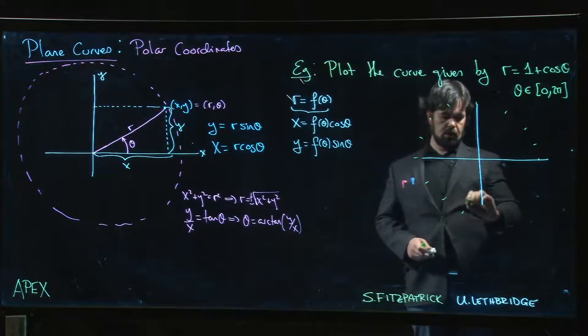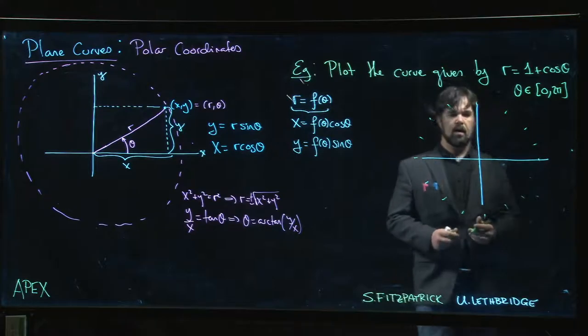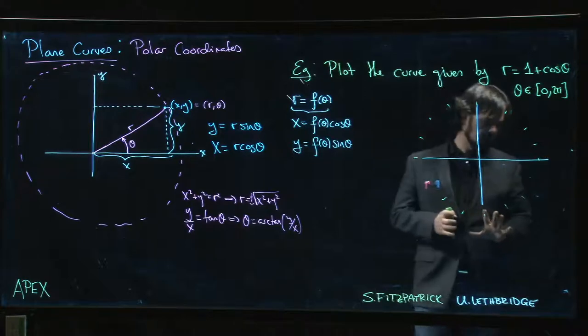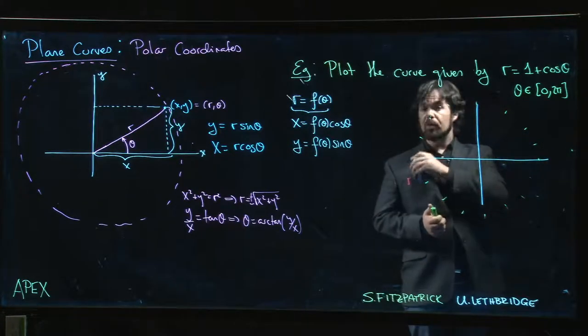And you just kind of work your way around the unit circle and for each of the angles where we know the value on the unit circle, you plot the given r value and the first couple times you do this...